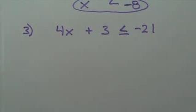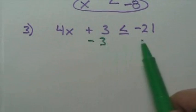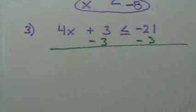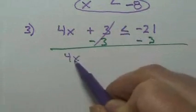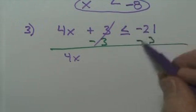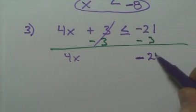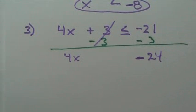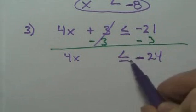Third example. My first step is to get rid of the plus three — do its opposite. That's zero, so that gives me four x. Negative twenty-one and negative twenty-three — they're both negative, so I'll just add them up since they're the same sign. Negatives don't cancel unless you're multiplying or dividing. So this is negative twenty-four. Do I need to switch the arrow? All I did is subtract three, so no.